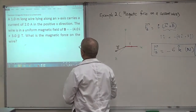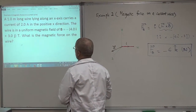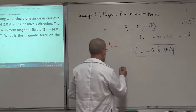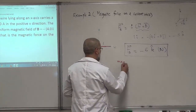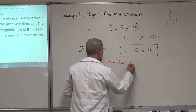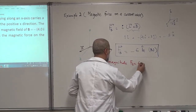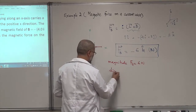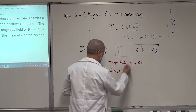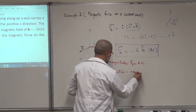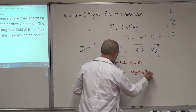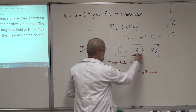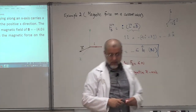The question asks for the magnetic force on the wire. The magnitude of the force is 6 newton. The direction is the negative z-axis, which is minus k. That's the answer to this problem.